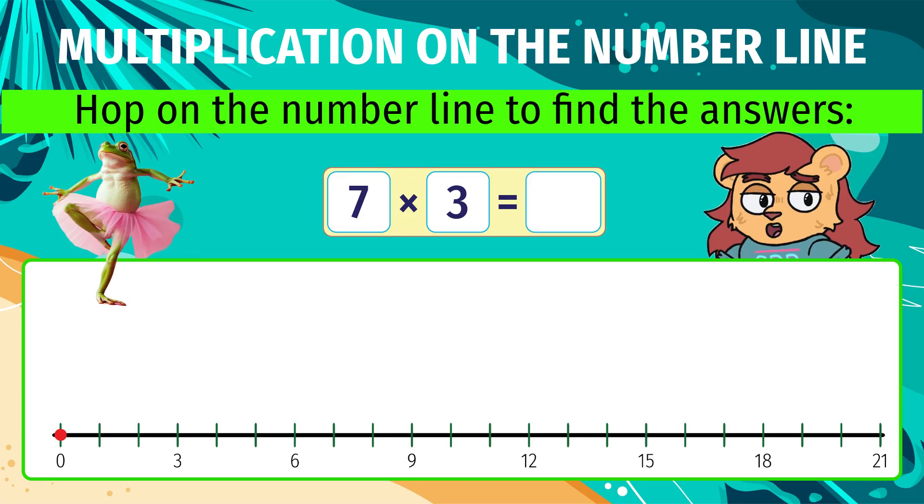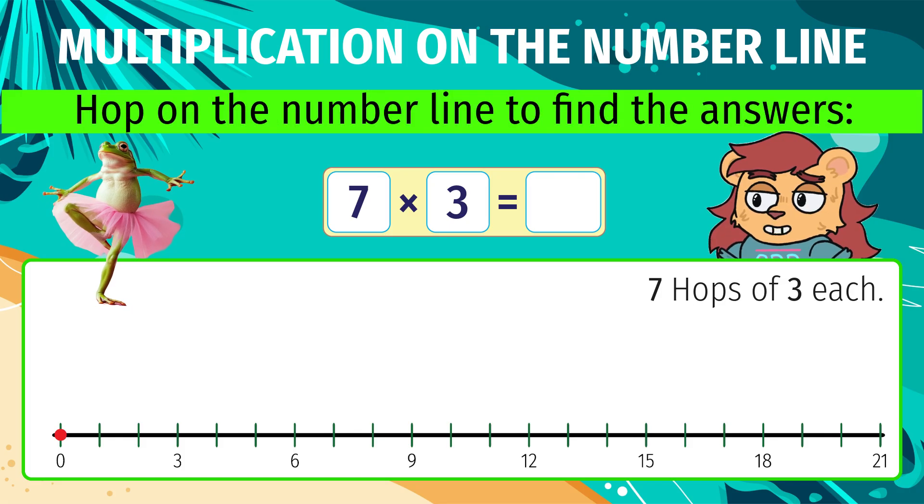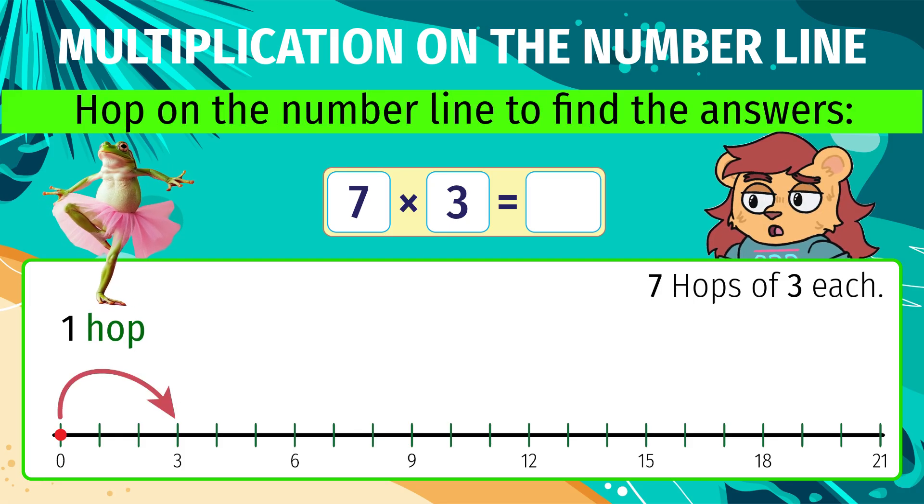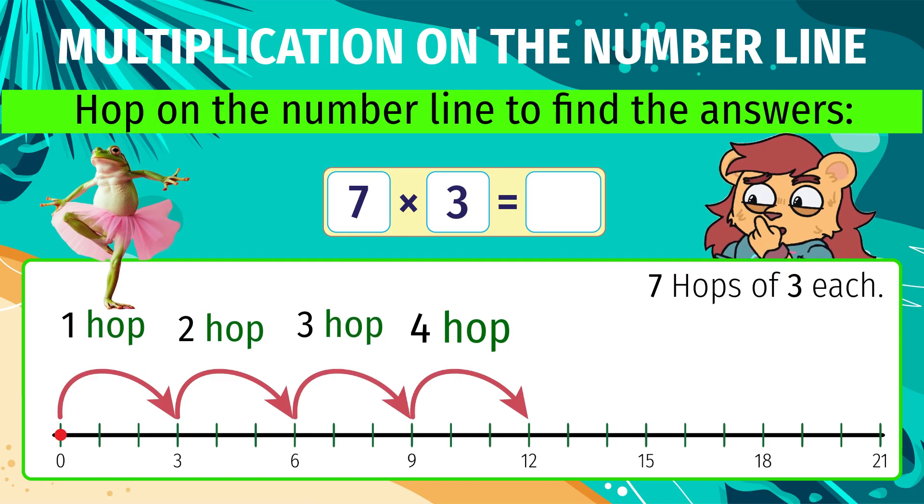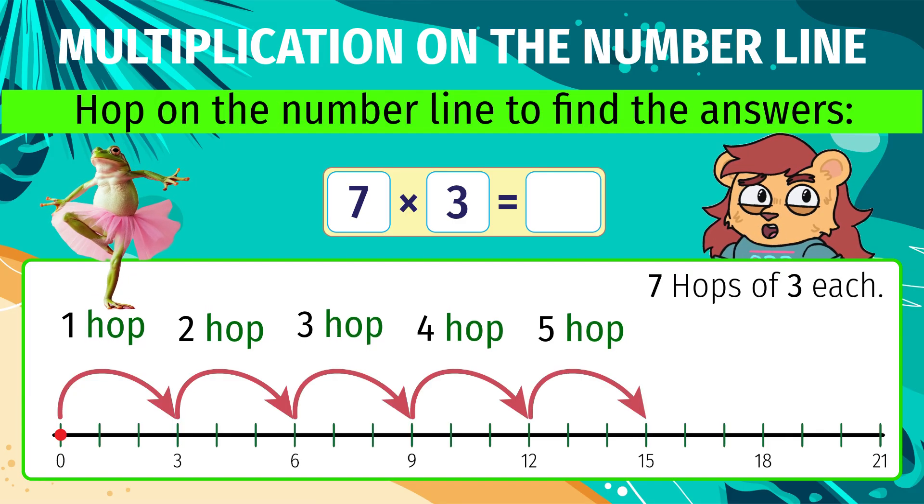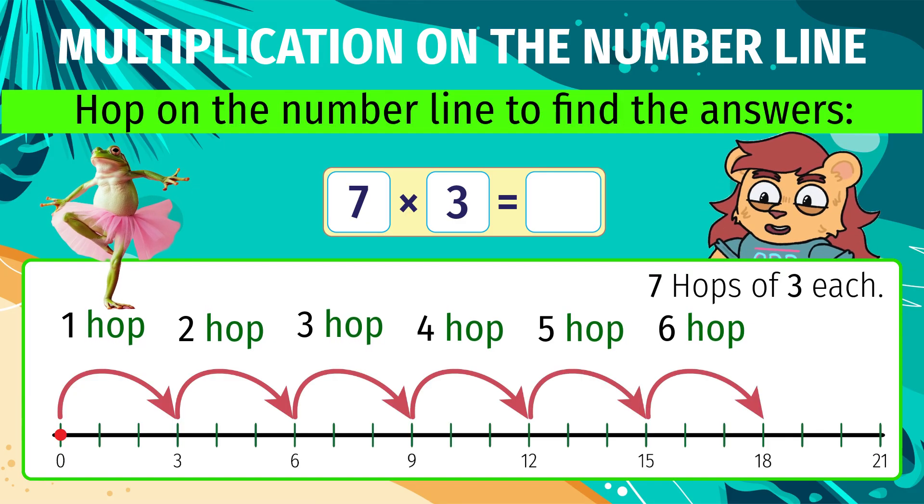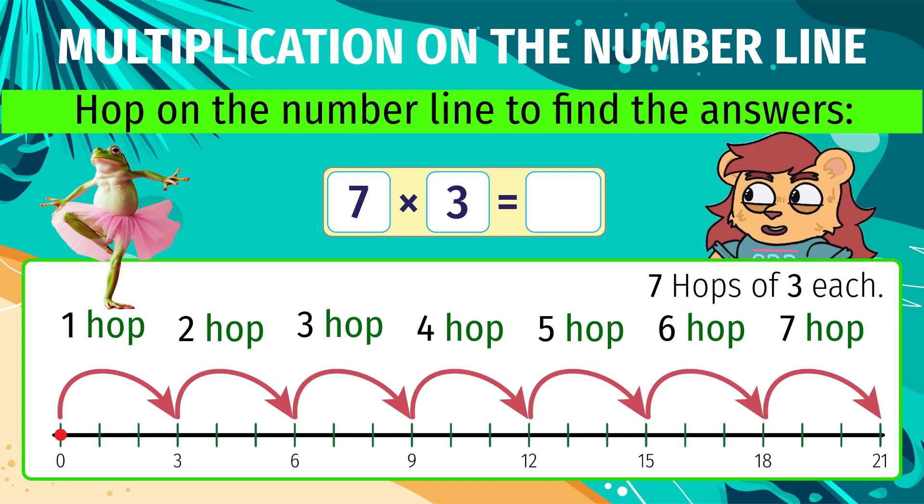So, 7 into 3 means 7 hops of 3. We hop 7 times, each time by 3 numbers, starting at 0. We end up at 21. 7 into 3 equals 21.